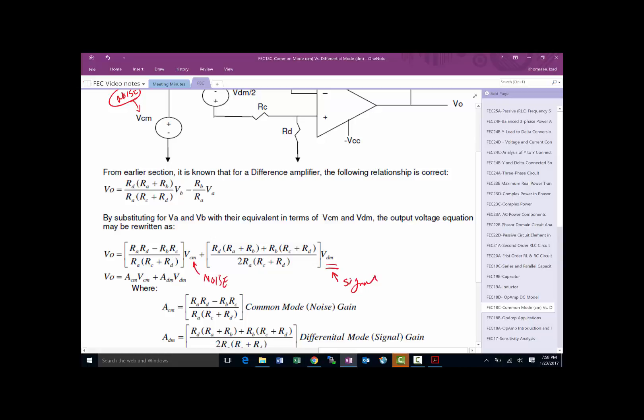The output is going to be this quantity times the noise plus this quantity times the signal. This quantity is the gain of the common mode - that's what the common mode voltage gets multiplied by. And this is the gain of differential mode.